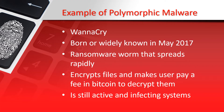An example of polymorphic malware is WannaCry. WannaCry is a ransomware worm that spread rapidly across several computer networks in May 2017. After infecting a PC, it encrypts files on the hard drive, making it impossible for users to access them, then demands a ransom payment in Bitcoin in order to decrypt them and restore access.